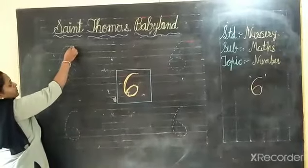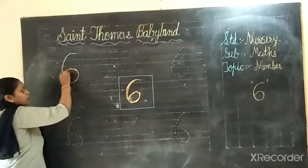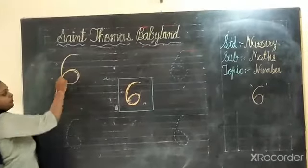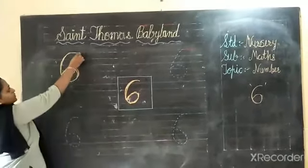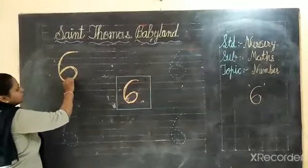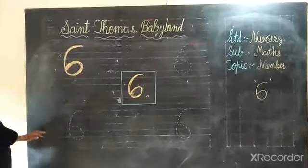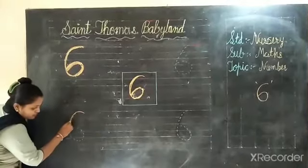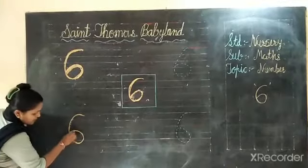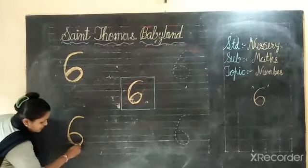Curve to join round, and back at number 6. Focus with that. Curve to join round, and back at number 6. Second time — curve to join round, and back at number 6.